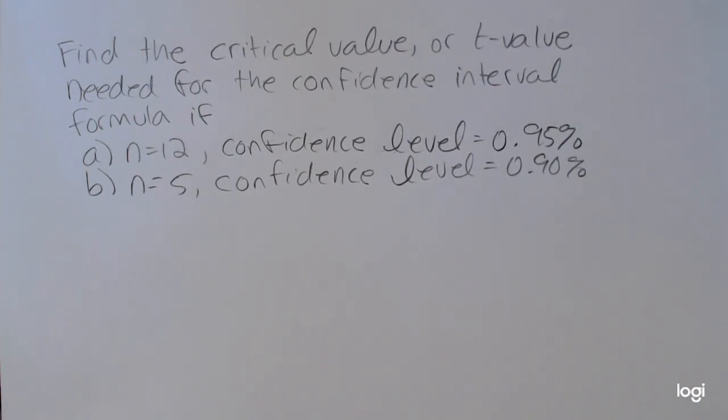So my first example is finding a t-value for when n is equal to 12 and our level of confidence is 0.95.